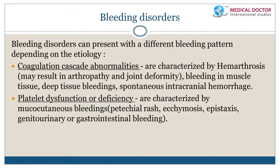Abnormalities of the coagulation cascade produce a distinct bleeding pattern: deep tissue bleeding, bleeding into joint spaces causing hemarthrosis and potentially arthropathy or deformity, and spontaneous intracranial hemorrhage. In contrast, platelet deficiency or dysfunction presents with skin bleeding, petechial rash or ecchymosis, mucosal bleeding, epistaxis, and genitourinary or gastrointestinal tract bleeding.